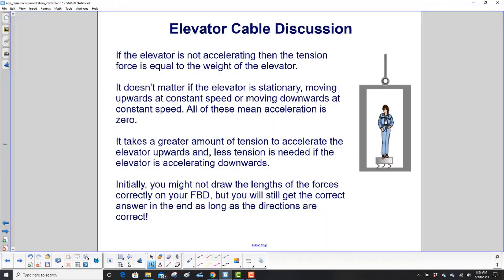If the elevator is not accelerating, that means the velocity is constant, then the tension force is equal to the weight of the elevator. What's neat is it doesn't matter if the elevator is stationary, moving upwards at a constant speed, or moving downwards at a constant speed - all of these mean acceleration is zero. It takes a greater amount of tension to accelerate the elevator upwards and less tension is needed if the elevator is accelerating downwards. You might not draw the lengths of the forces correctly on your free body diagram, but you will still get the correct answer in the end as long as the directions are correct and you do the math right.